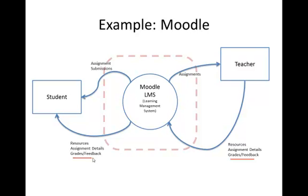Those resources, grades, and feedback are read by the student. This arrow is around the wrong way. The student puts in assignment submissions to Moodle, and those assignments are taken back by the teacher, which in turn marks them and goes back around in circles. So that is a context diagram for Moodle.